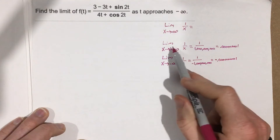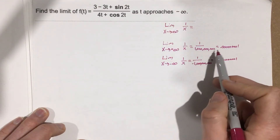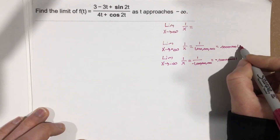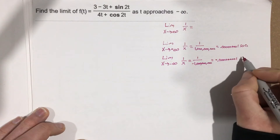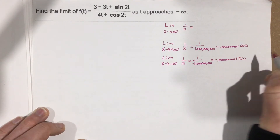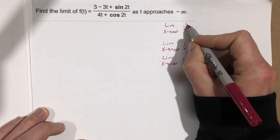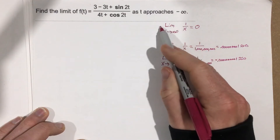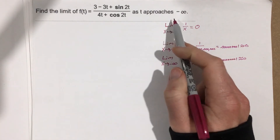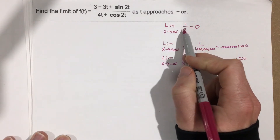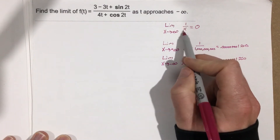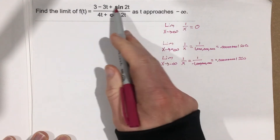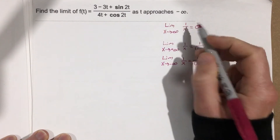As you take the limit as x approaches positive infinity, 1 over x approaches 0 from the right, and as x approaches negative infinity it approaches 0 from the left. Because they're both essentially equivalent to 0, we say the limit as x approaches infinity of 1 over x is 0. We're going to use this throughout this whole lesson to figure out limits as we approach positive and negative infinity, by using the 1 over x fraction to manipulate each expression so we can cancel out terms.